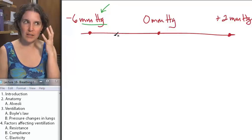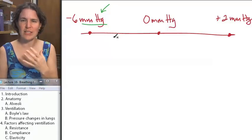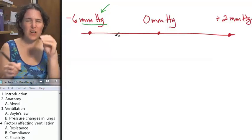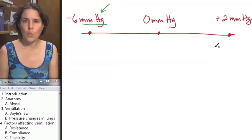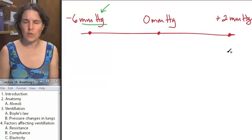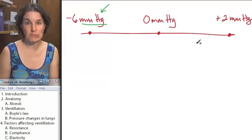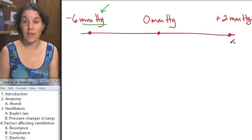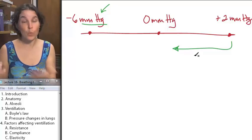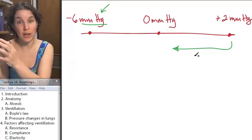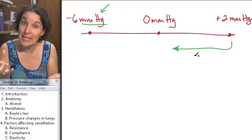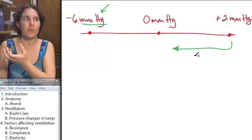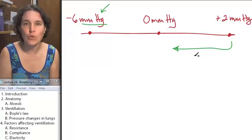The thing I want you to get clear before we even start is if there is a pressure gradient, what direction will air molecules move? Will they move to lower pressures or to higher pressures? Air molecules will move from a high pressure area to a low pressure area.